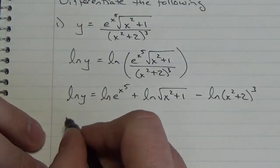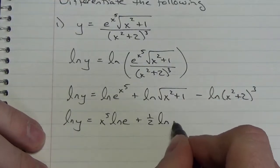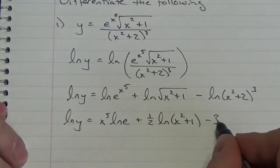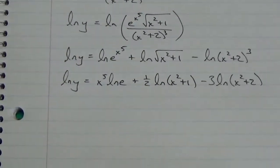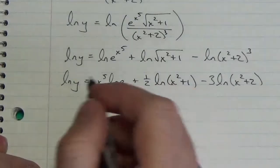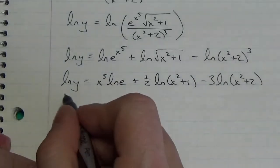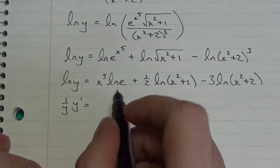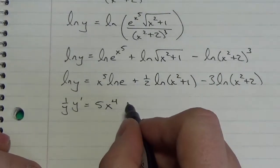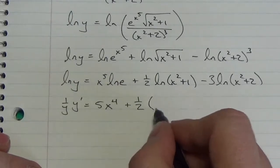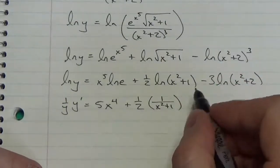I'm using the laws of logarithms to split this up as much as I can. Now I'm going to deal with the exponents. So this becomes: the natural log of y will equal x to the fifth times the natural log of e, plus one-half times the natural log of x squared plus 1, minus 3 multiplied by the natural log of x squared plus 2. Now I've used the laws of logarithms to split this up. Now I'm just going to take the derivative. The derivative of the natural log of y — bearing in mind I have to do it this way because y is locked within a function, so this is an example of implicit differentiation — becomes 1 over y, times y prime. Natural log of e is just 1, so I'm dealing with the derivative of x to the fifth: that's 5x to the fourth. Here this is going to be plus one-half, and the derivative of the natural log gives 1 over x squared plus 1, multiplied by the derivative of what's inside, which is 2x.